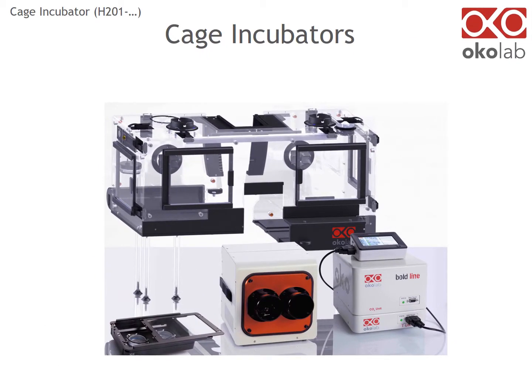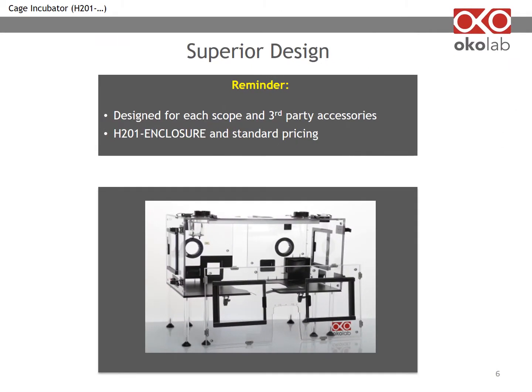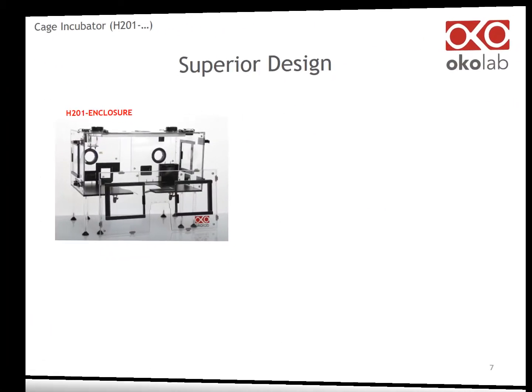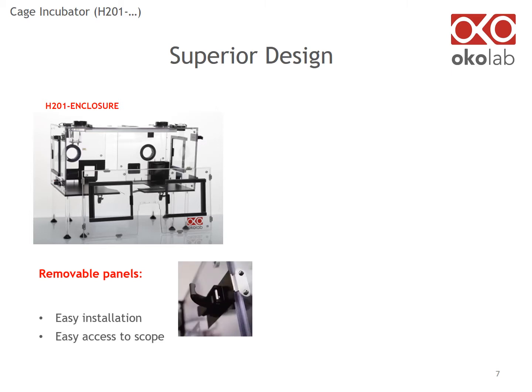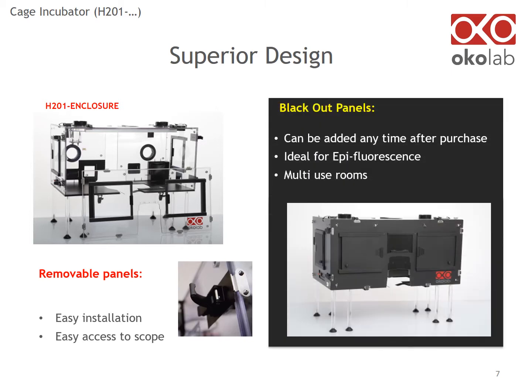At Ocolab, we designed each enclosure for the specific microscope and third-party accessories. However, the part number and pricing is always standard. Ocolab enclosures are designed to fit the profile of each microscope, keeping into account all the peripheral accessories. The enclosure is easy to install, as the panels are held in place by hinged clips. To fully access the microscope, simply remove the front panel. You can add blackout panels at a later time — they are an excellent way to protect your most light-sensitive samples.